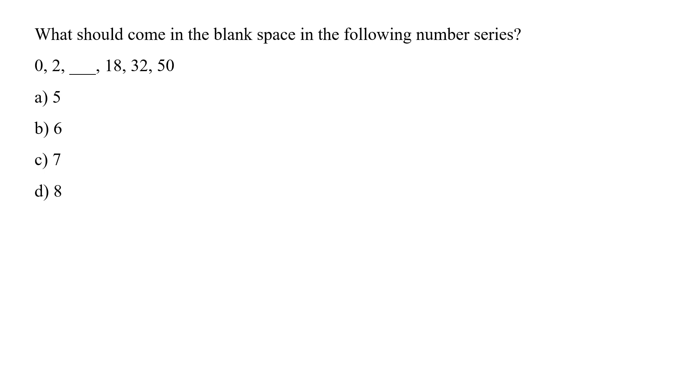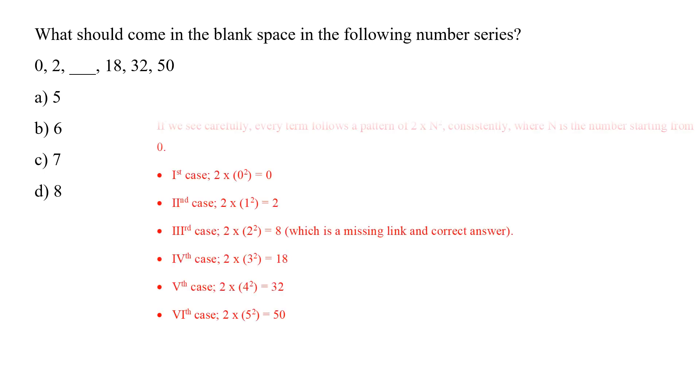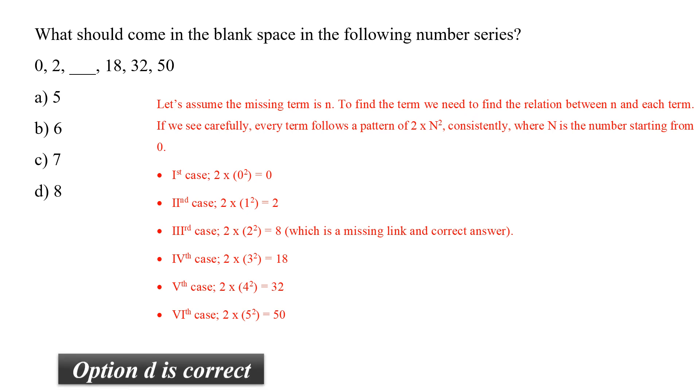What should come in the blank space in the following number series? 0, 2, dash, 8, 32, and 50. To solve this kind of question, we have to find out what is the pattern they are following. So if we see the pattern, then we will be finding out that they are following a formula of 2 into n raised to the power 2, where n is the number starting from 0. So if we solve 2 into first 0 square, that would be the value will be 0. And if we solve it for the further values like 1, 2, 3, 4, 5, then we will find out that the pattern is being followed. So the missing word would be 8 which is coming in the third case. So option B would be the correct answer.